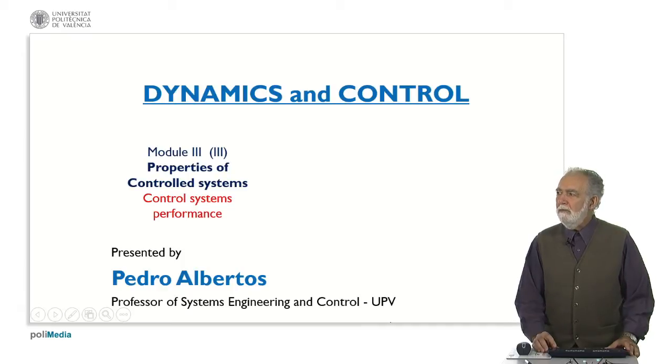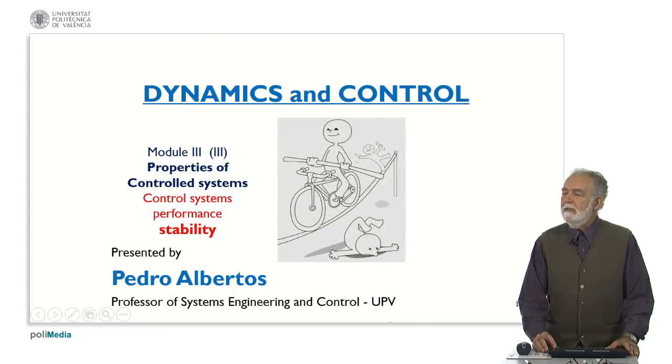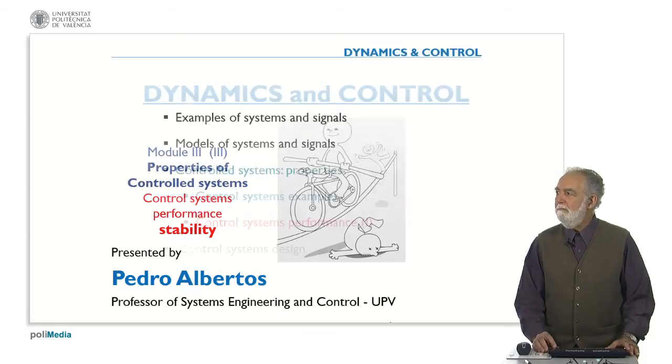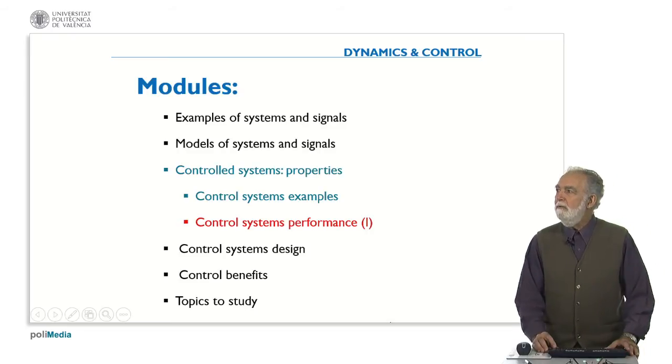Today we are following module number three about the properties of control systems. In particular we are going to deal with stability, which is one of the main performance characteristics of control systems. As I said, we are going to deal today with stability.